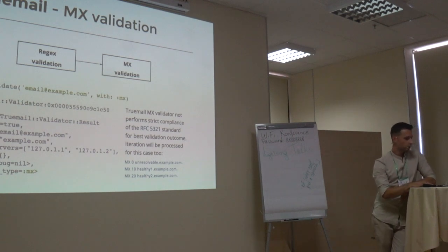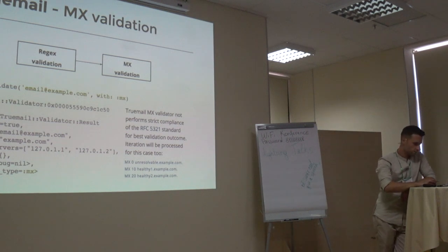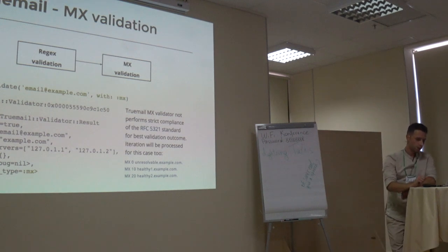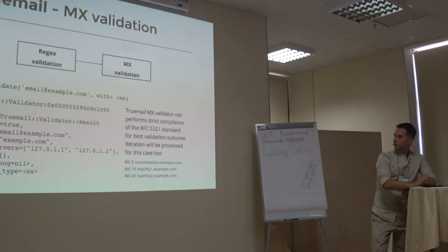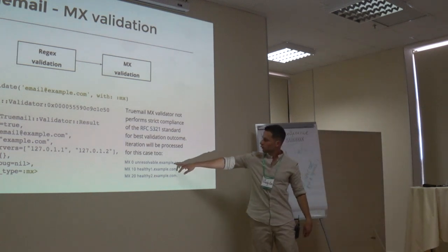Validation by MX records is the second validation level. It uses regex validation before running itself. This is an example of successful MX validation. Truemail MX validator doesn't perform strict following of RFC 5321 standard too for best validation outcome. So iteration will be processed even if one of MX records has unresolvable host. Here is an example of it.